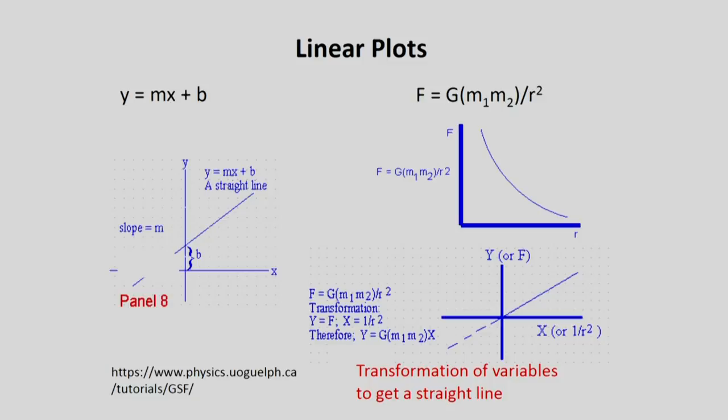So it is always useful to transform your data in order to achieve a straight line. Because that straight line makes it clear how good the relationship is, and in fact, what the relationship is.